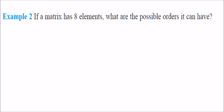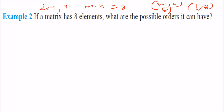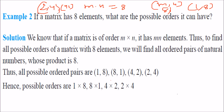If a matrix has eight elements, what are the possible orders? We need m × n = 8. The possible combinations are: 8×1, 1×8, 4×2, and 2×4.